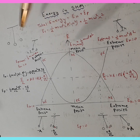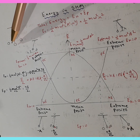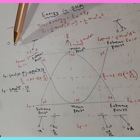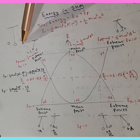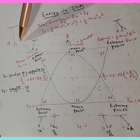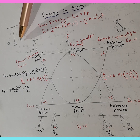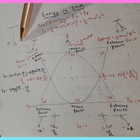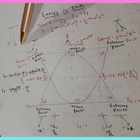Now let's get into potential energy. Starting from mean position — the bob gains some height as it moves toward the extreme. Since velocity stops at the extreme, kinetic energy is 0, but it gains height, so potential energy must be maximum there. It reaches its maximum height at its amplitude, so potential energy is maximum at the extreme position.